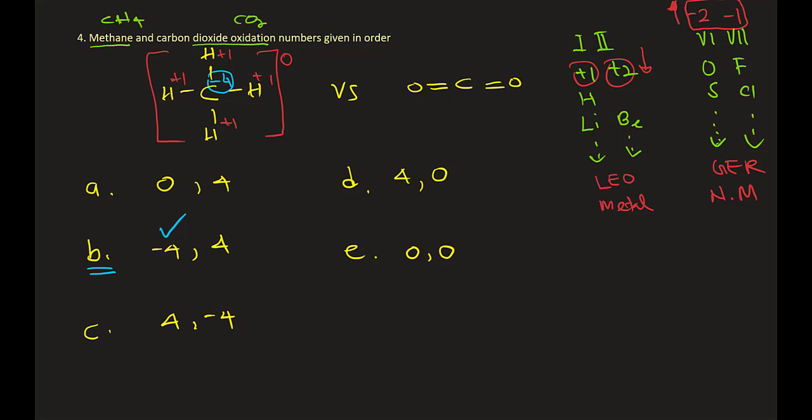Let's confirm with carbon dioxide. So carbon dioxide, oxygen should be minus two, minus two, based on our idea. And then the overall charge on the CO2 is zero. And then the carbon should be plus four. So that's how we decide. So minus four, plus four in order, answer B is correct.